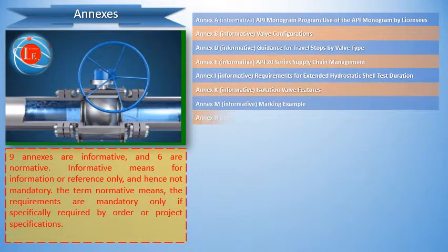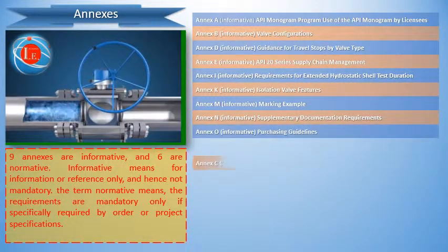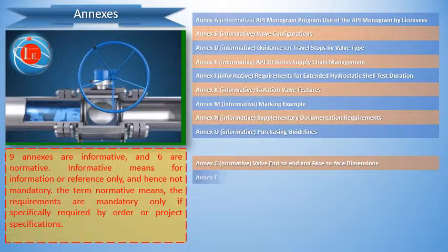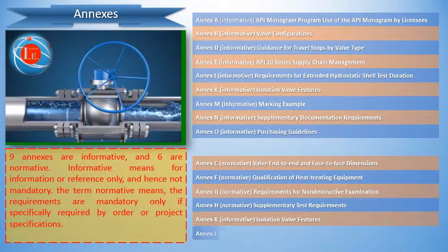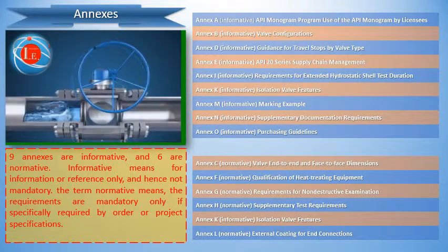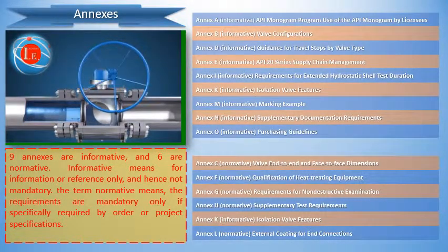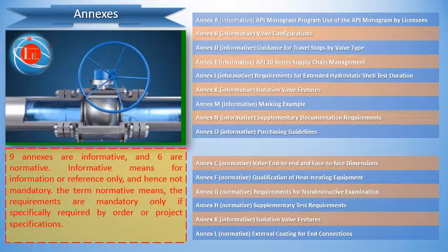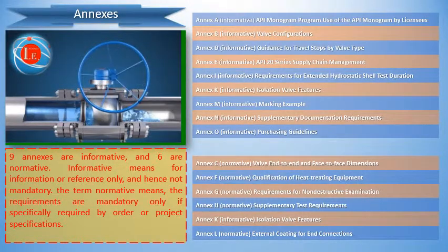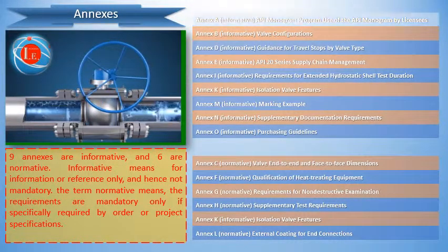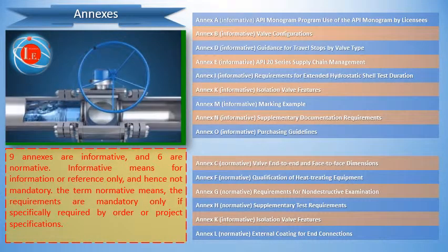The term informative means for information or reference only, and hence not mandatory. The term normative means the requirements are mandatory only if specifically required by order or project specifications. If a product is supplied bearing the API monogram and manufactured at a facility licensed by API, the requirements of Annex A apply.